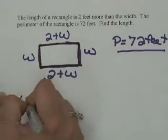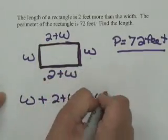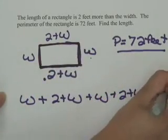So W+2+W plus another W plus another 2+W equals 72 feet.